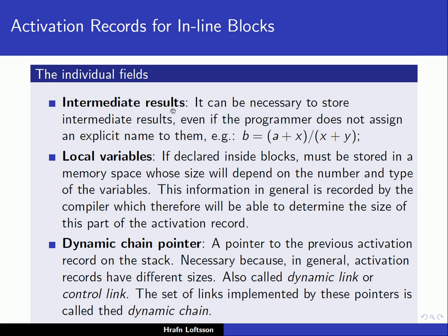Storing intermediate results is something we discussed earlier. It can be necessary to store intermediate results even if the programmer does not assign explicit names to them. For example, in an expression like b = (a + x) / (x + y), the result of a + x and the result of x + y must each be computed, giving rise to two temporary variables. The compiler generates these temporary variables, and they must be kept in the activation record for the block.